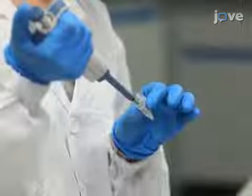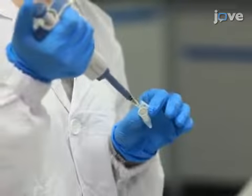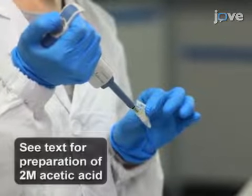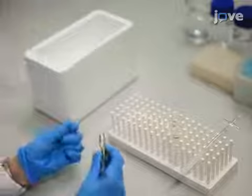To isolate sialic acids from milk, transfer 50 microliters of milk into a 1.5 milliliter centrifuge tube and add 1.2 milliliters of prepared aqueous acetic acid solution. To isolate sialic acids from liver tissue, gently thaw 20 to 50 milligrams of mouse liver and transfer it into a dounce tissue grinder.